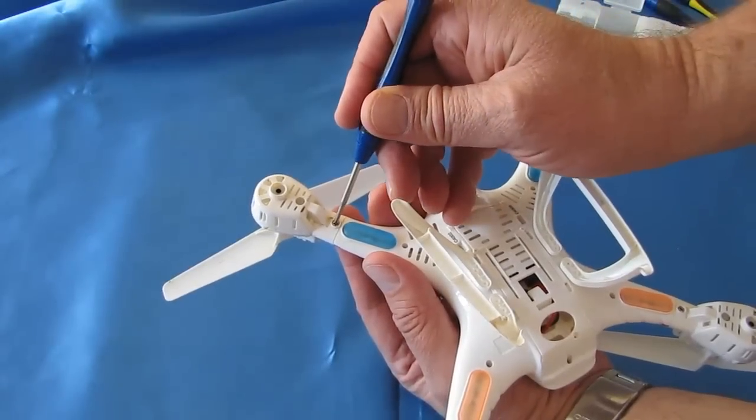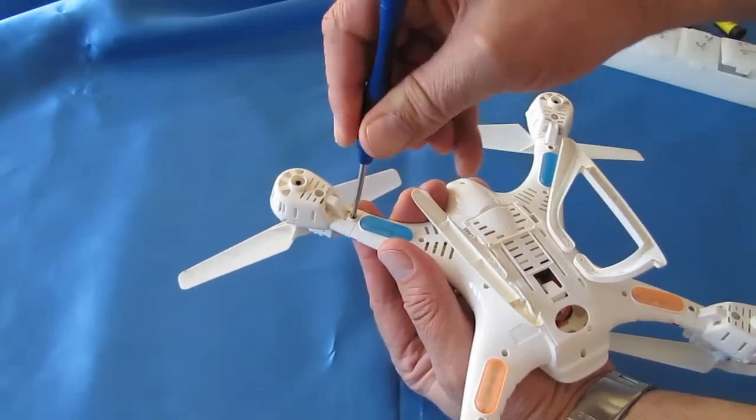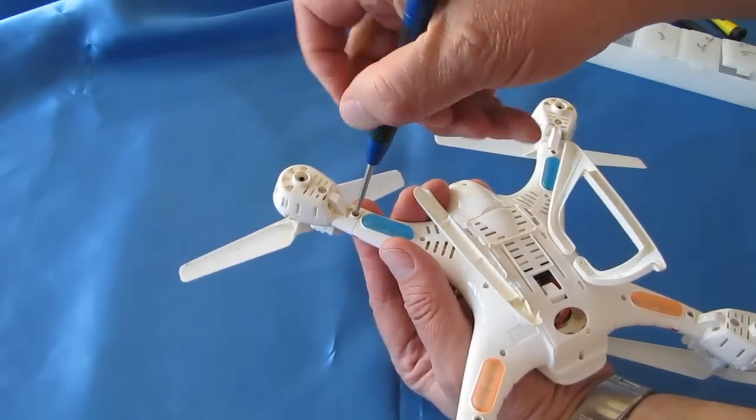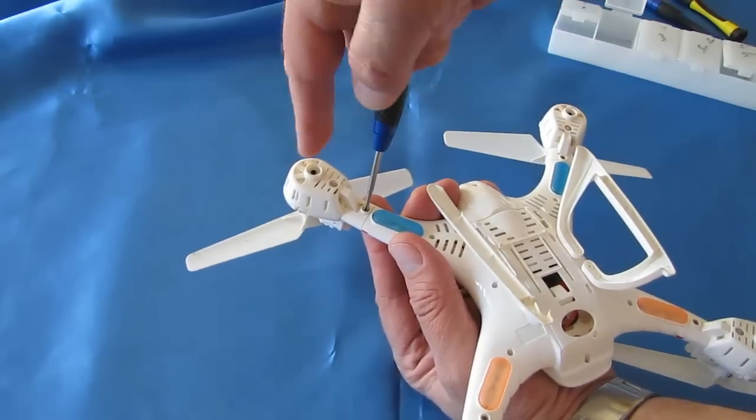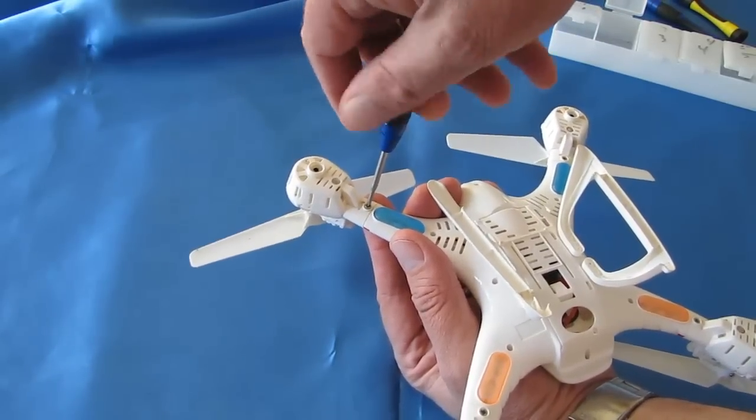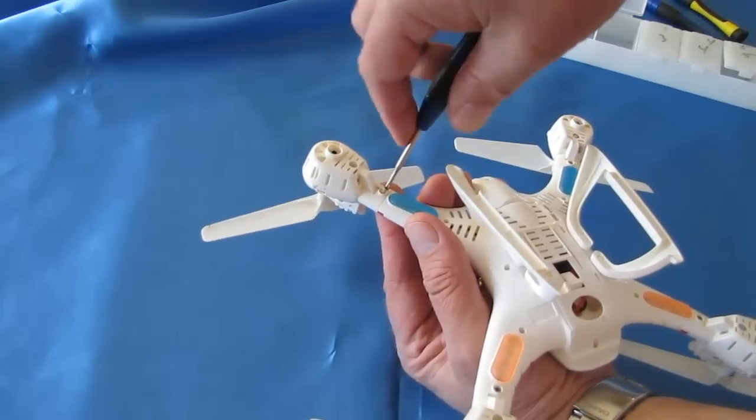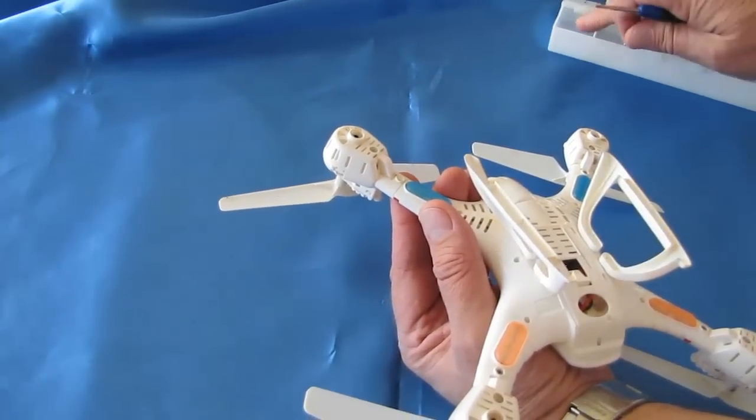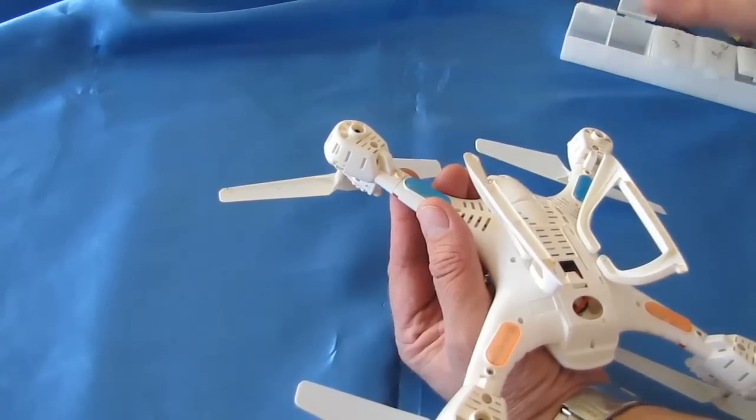First thing you want to remove is this larger screw just in front of the LED. If you want to get inside this particular gearbox case, you've got to remove the screw first. Just quickly take it out and place the screw aside. Try to remember where it came from.